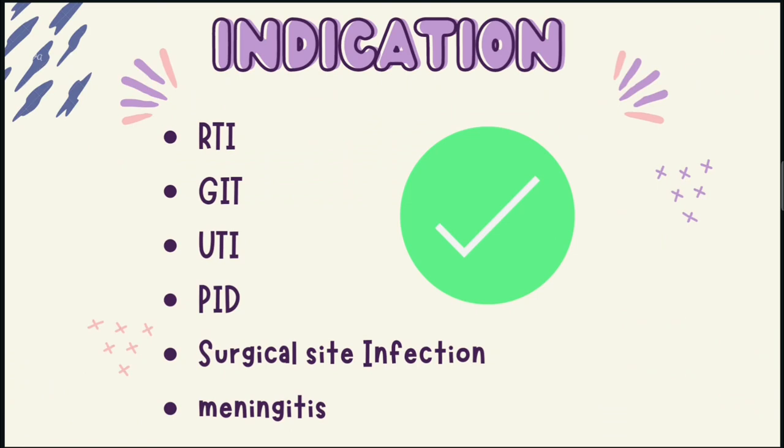Now we will see about the indications of piperacillin and tazobactam. First, respiratory tract infection — for example, pneumonia and asthma. Gastrointestinal tract infection i.e. stomach infection. Urinary tract infection. Pelvic inflammatory disorders. Surgical site infection. Meningitis.